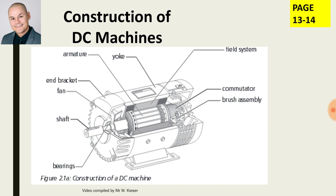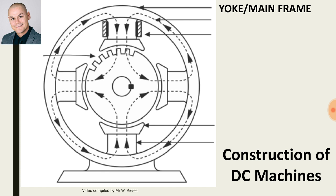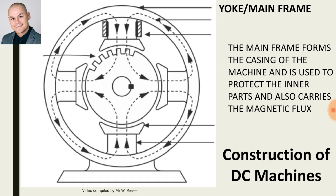As you can see from these different components, our machine has quite a few components and each component has a main function. Let's start off with the main function of the yoke, also known as the mainframe. The mainframe forms the outer casing of the machine, is used to protect the inner parts, and also helps to distribute the magnetic flux.